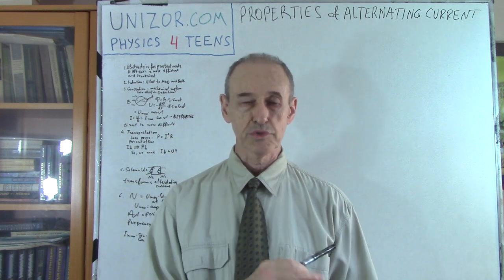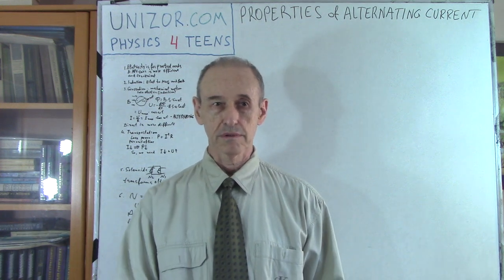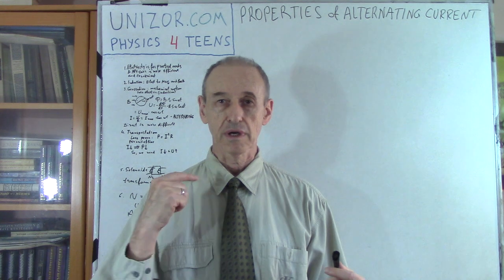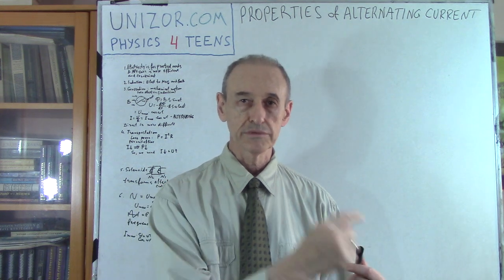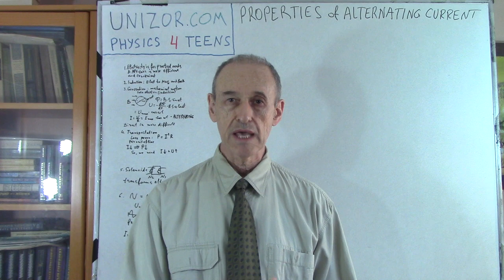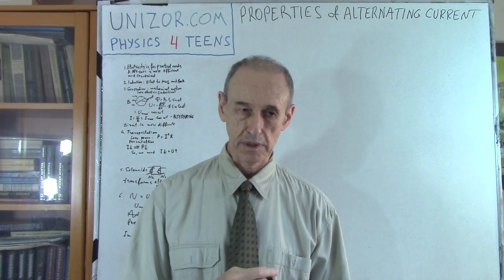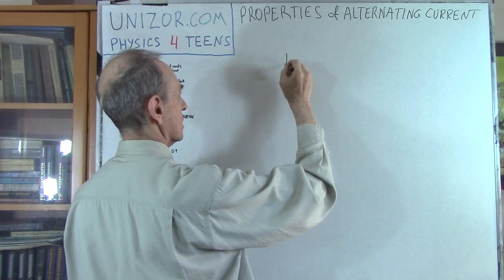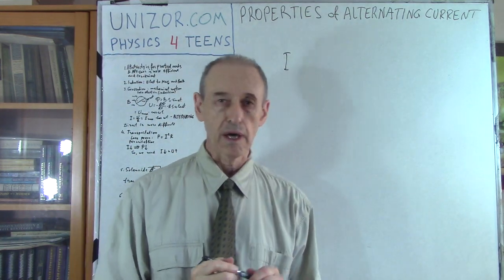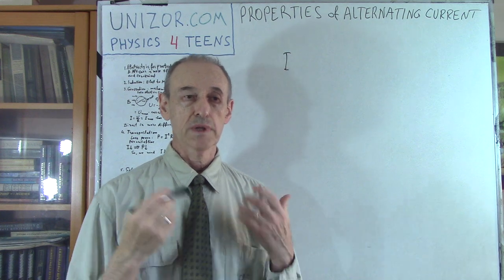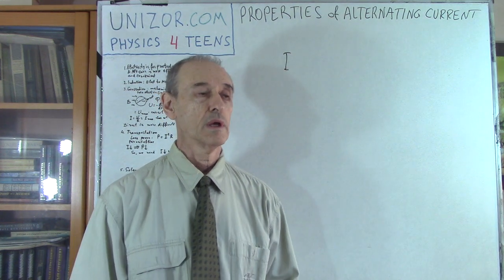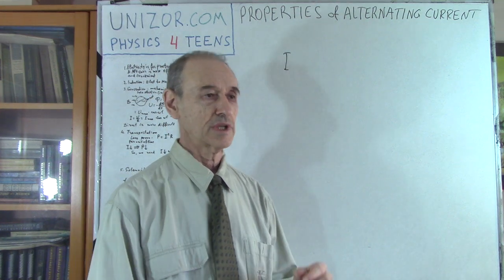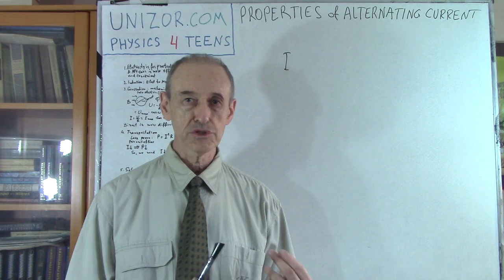First of all, let me tell you right up front that alternating current is not the same as direct current. Direct current is when you have a constant flow of electrons in one direction with the same intensity, so to speak — the current itself, which is usually denoted with the letter I, is constant. Alternating current is, well, alternating — it alternates in magnitude and direction.